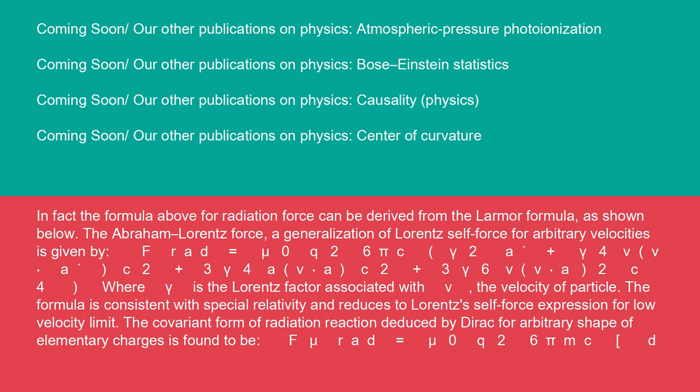The Abraham-Lorentz force, a generalization of Lorentz self-force for arbitrary velocities is given by F_rad = (μ₀q²)/(6πc)[γ²A + γ⁴(V·A)/c² + 3γ⁴(A·V)A/c² + 3γ⁶V(V·A)²/c⁴], where γ is the Lorentz factor associated with V, the velocity of particle. The formula is consistent with special relativity and reduces to Lorentz's self-force expression for low velocity limit.